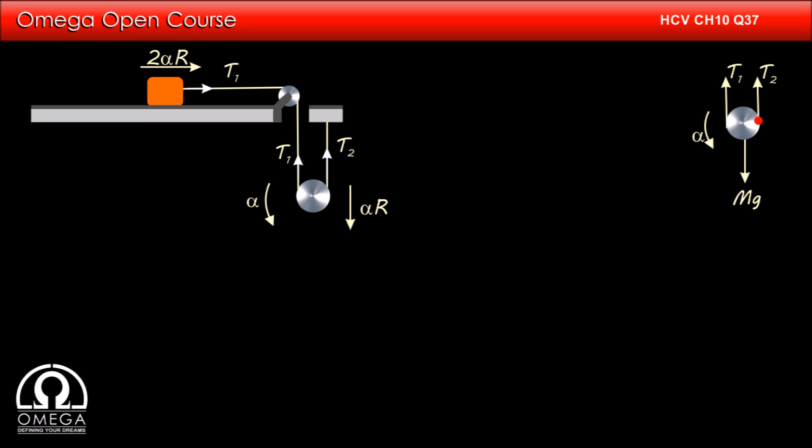If we take torque about this point, then the torque due to T2 is zero as it is passing through the point of contact. Torque due to gravity is capital M into gr in anticlockwise direction and torque due to T1 is 2T1r in clockwise direction as its line of action is at distance 2r from this point.